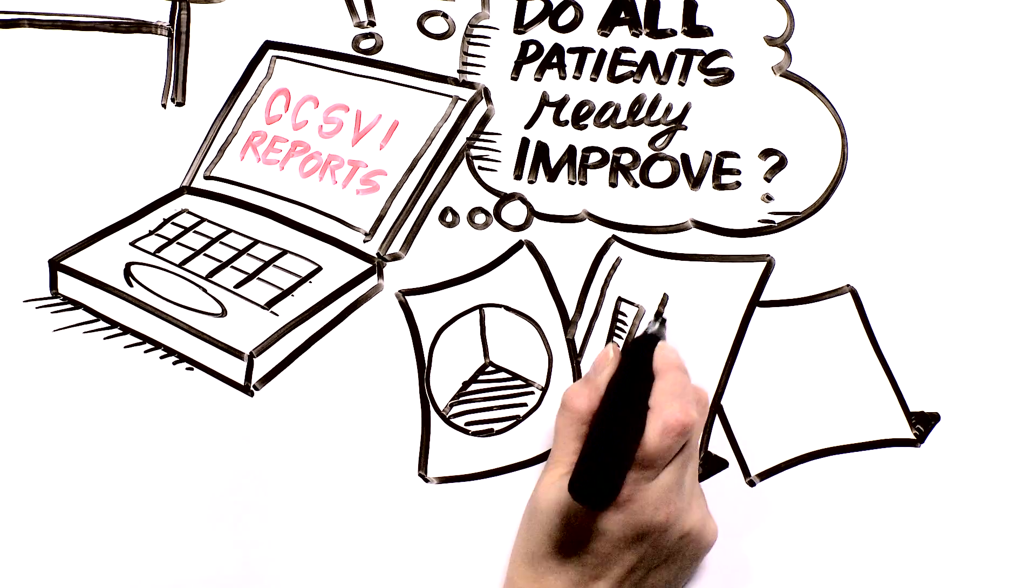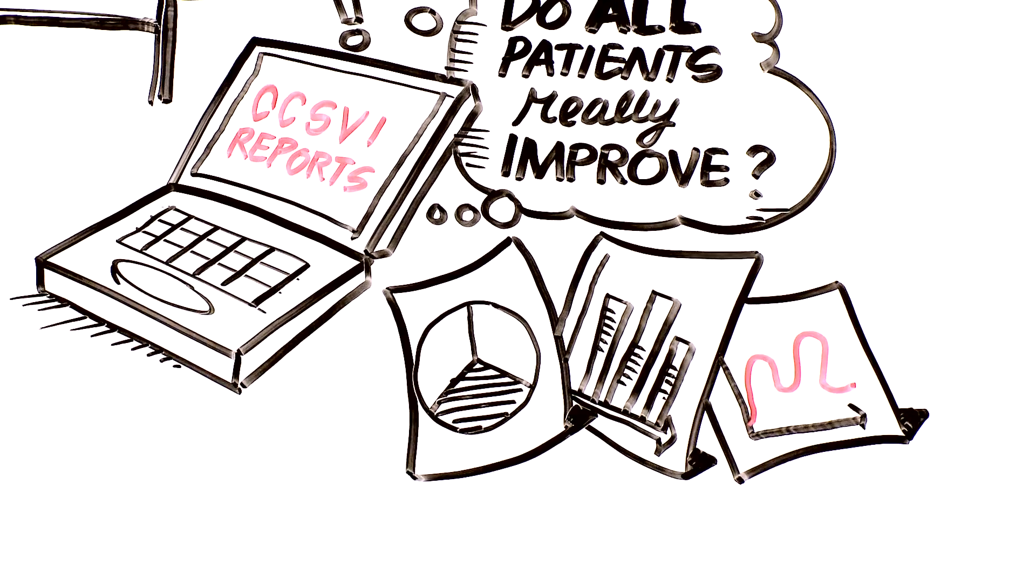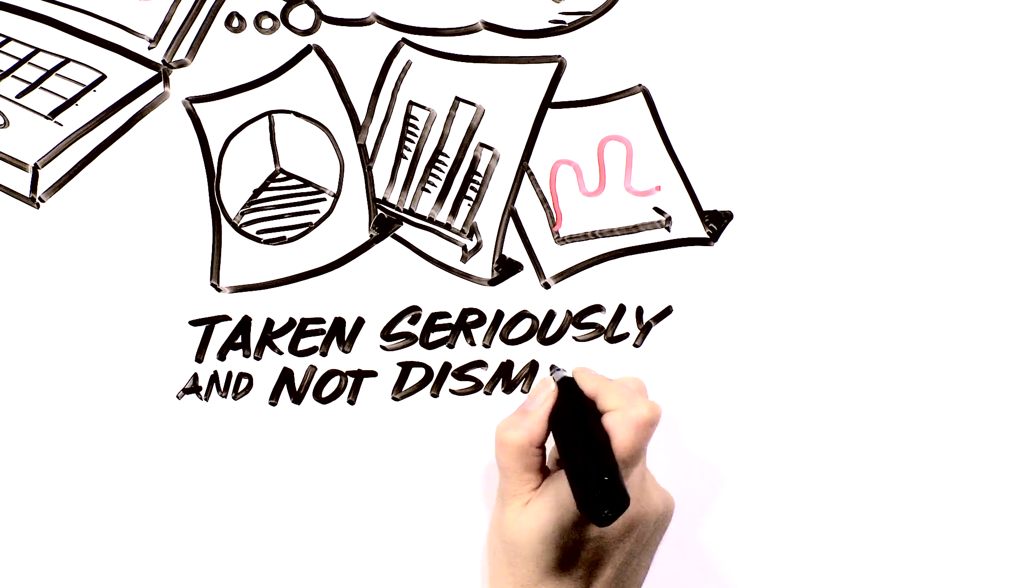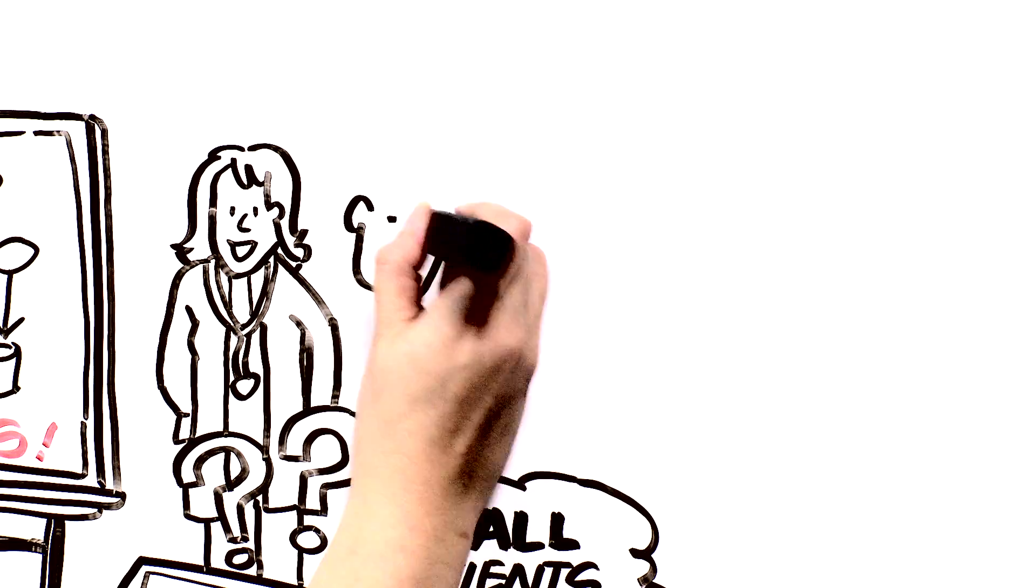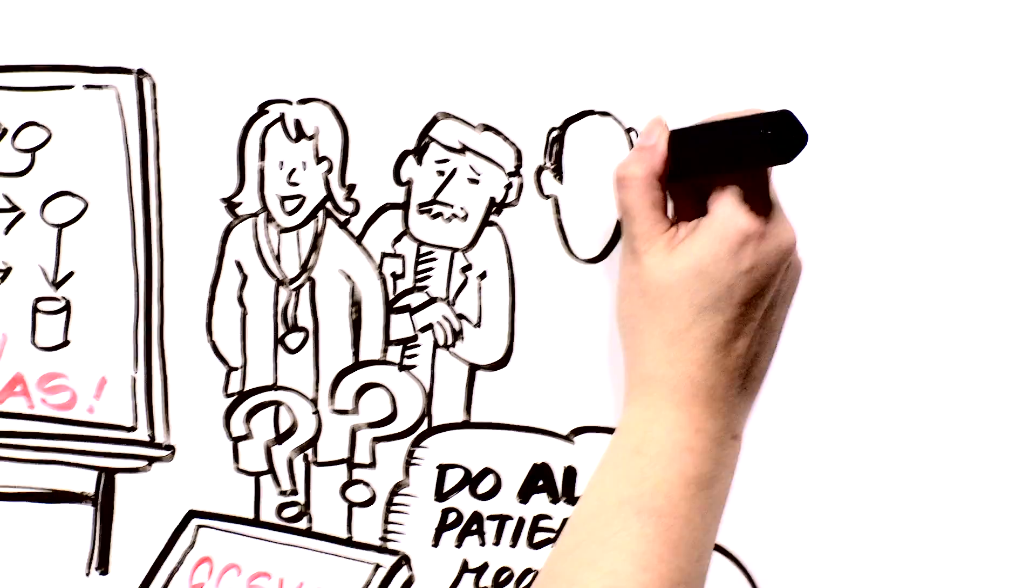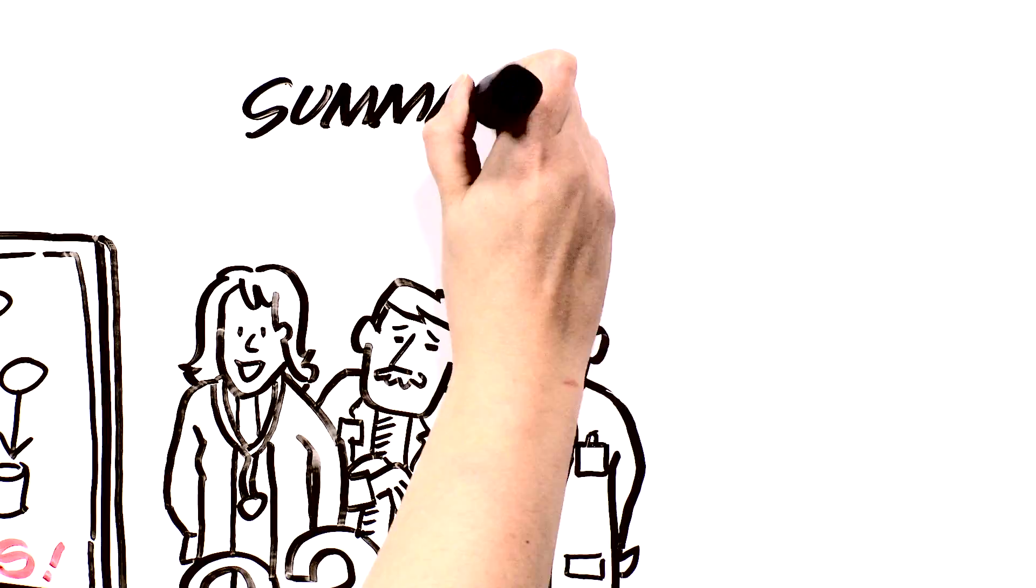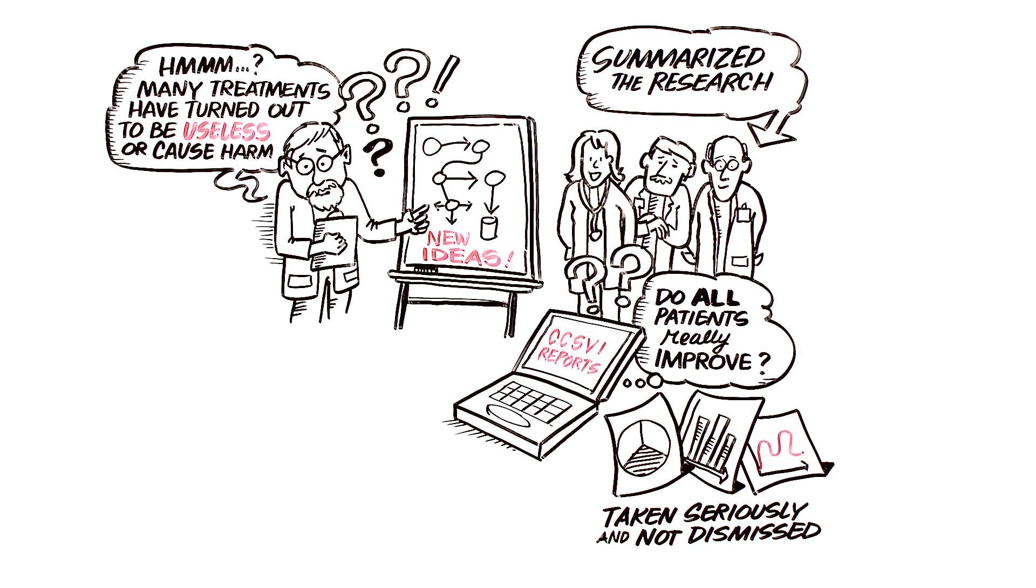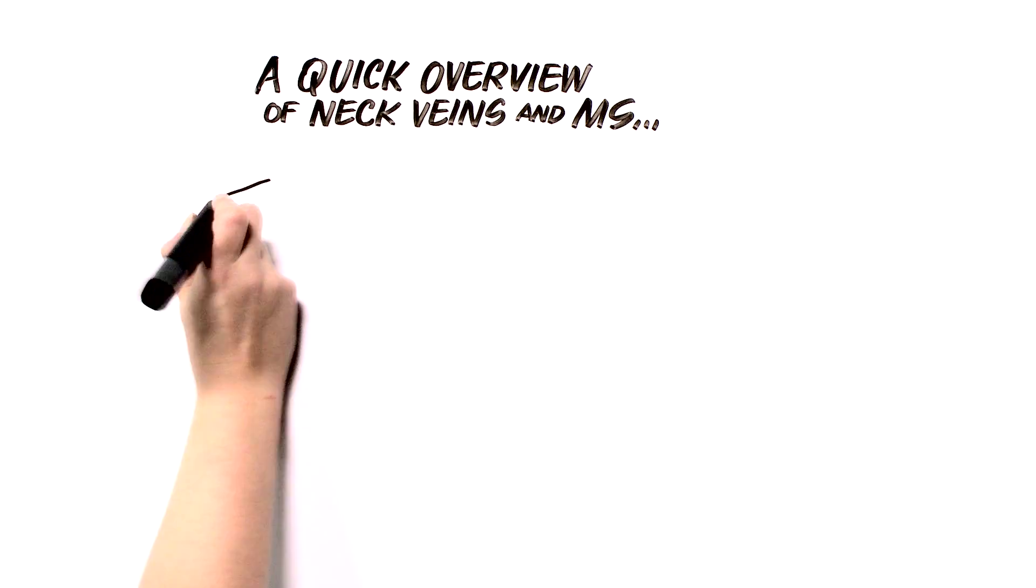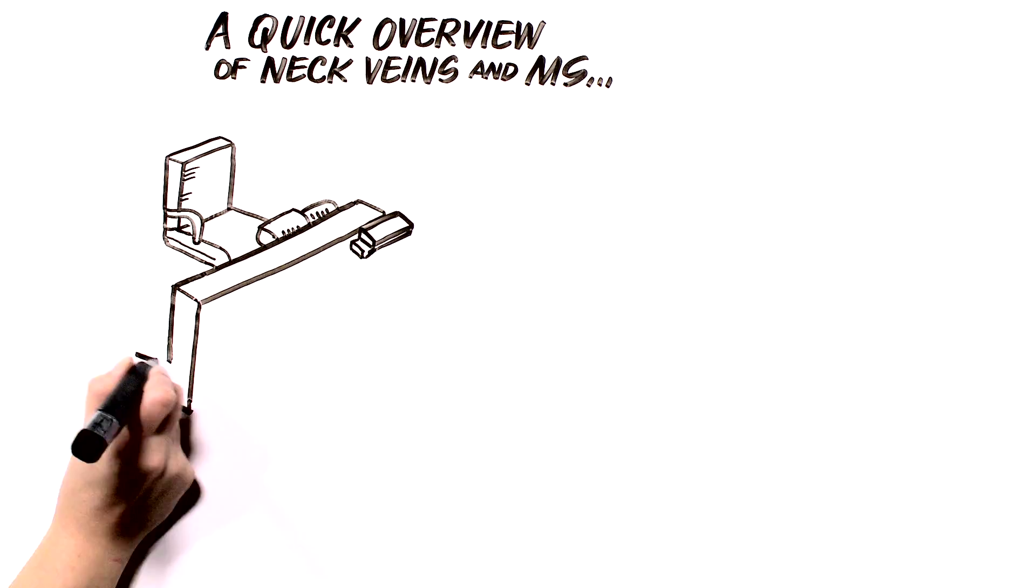Having said that, the many reports of dramatic responses deserve to be taken seriously and should not be dismissed. A first step is to summarize all of the research that has been reported to date on this topic. Some colleagues in Toronto and Calgary and I have done this, and I'm going to tell you what we found. Let's start with a quick overview of neck veins and MS. It's quite an interesting story.